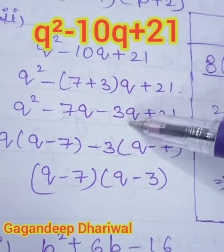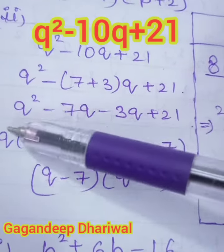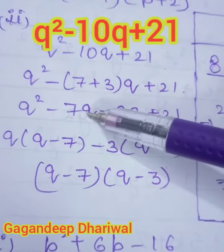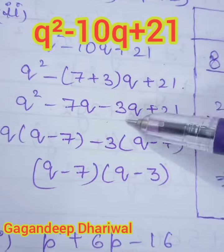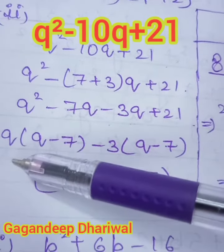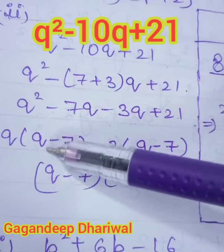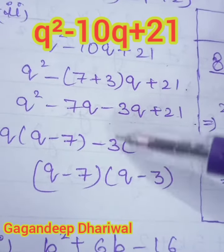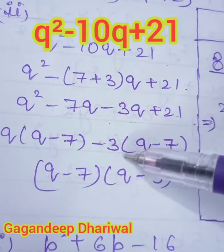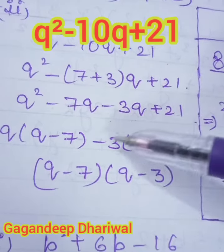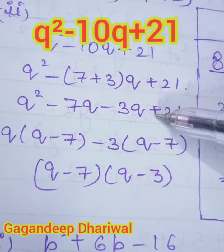Now take q common from the first two terms and take minus 3 common from the last two terms. Then we will have q, when we take common, then q minus 7, the remaining part. Minus 3, when you take minus 3 as common, then here q, then this minus converts this plus into minus, and here the remaining part is 7.